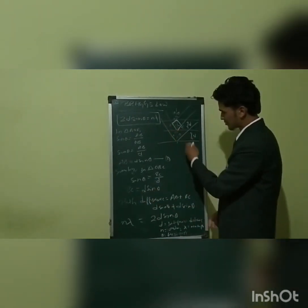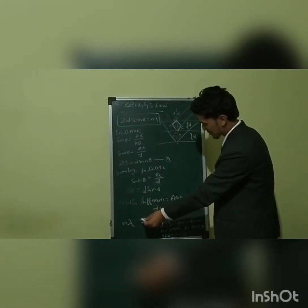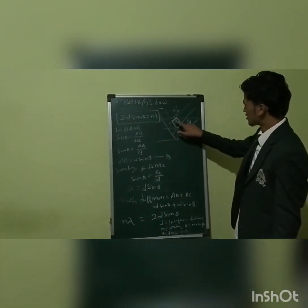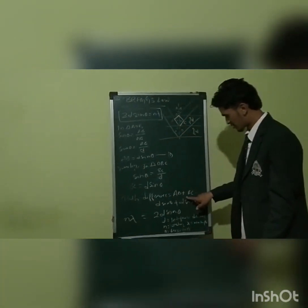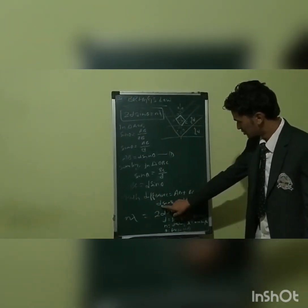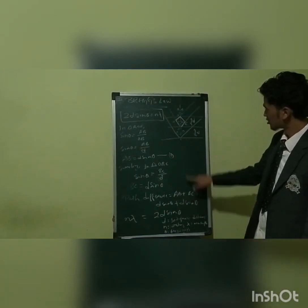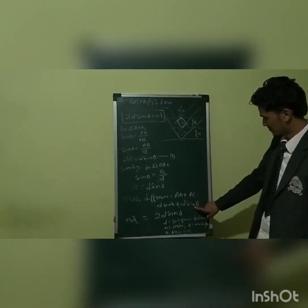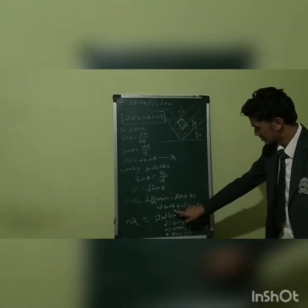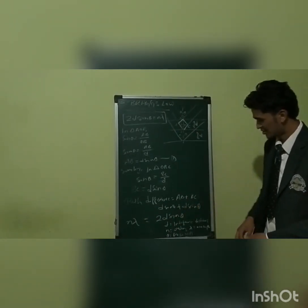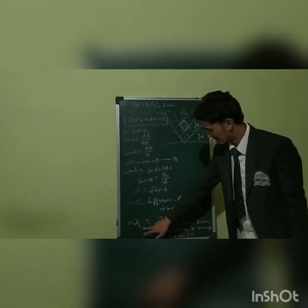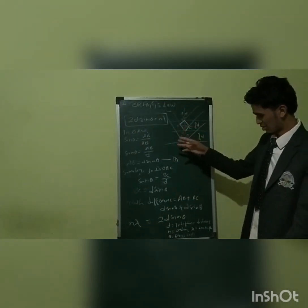The path difference is n lambda, and equals AB plus BC. Adding the two results: AB equals D sin theta and BC equals D sin theta, so the path difference is D sin theta plus D sin theta equals 2D sin theta. Therefore, 2D sin theta equals n lambda. This is the equation of Bragg's law.